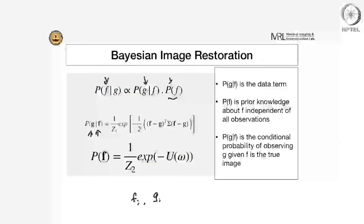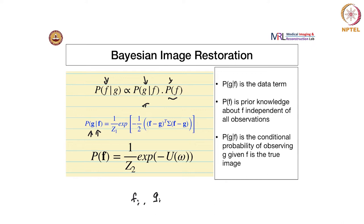P(G|F) is the data fidelity term — whatever F you are estimating should be consistent with what you have observed. F is the denoised version of G, and that should be meaningful.